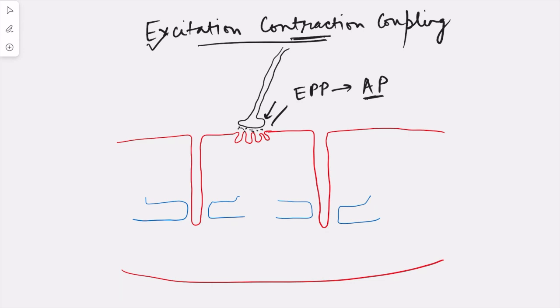For excitation-contraction coupling to happen, this electrical activity — the action potential — should travel along the muscle membrane fiber and reach the T-tubules. These T-tubules are basically invaginations of the muscle membrane which dip into the muscle. This is important because we have to link the action potential with the release of calcium, which is responsible for contraction, and this calcium should release into the sarcoplasm.